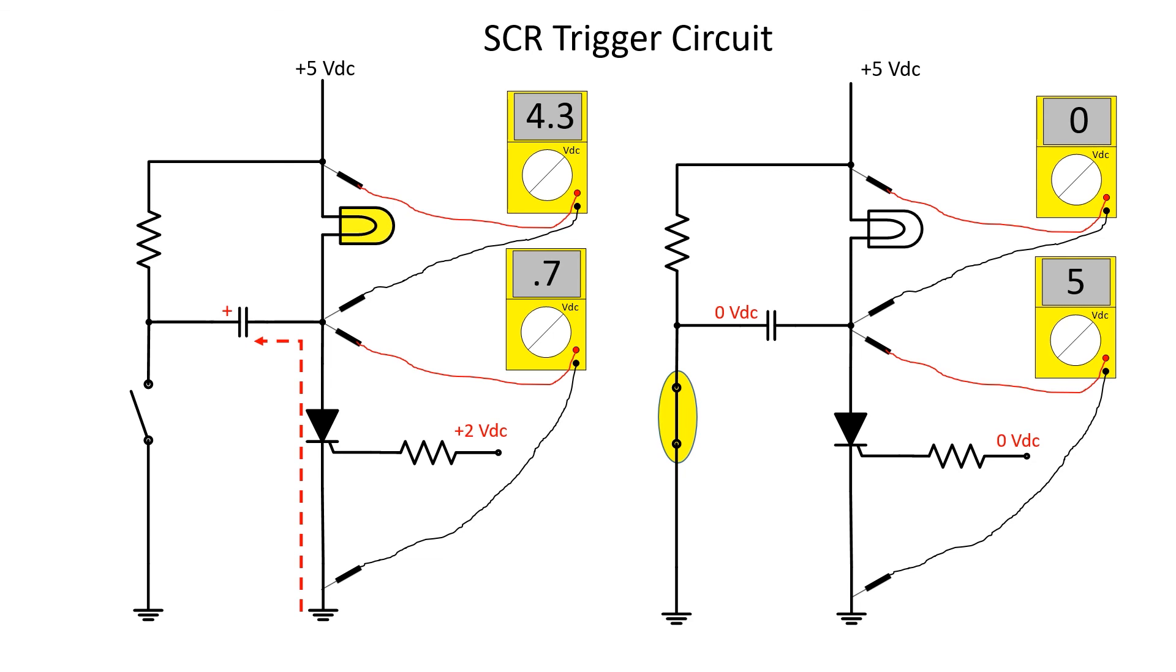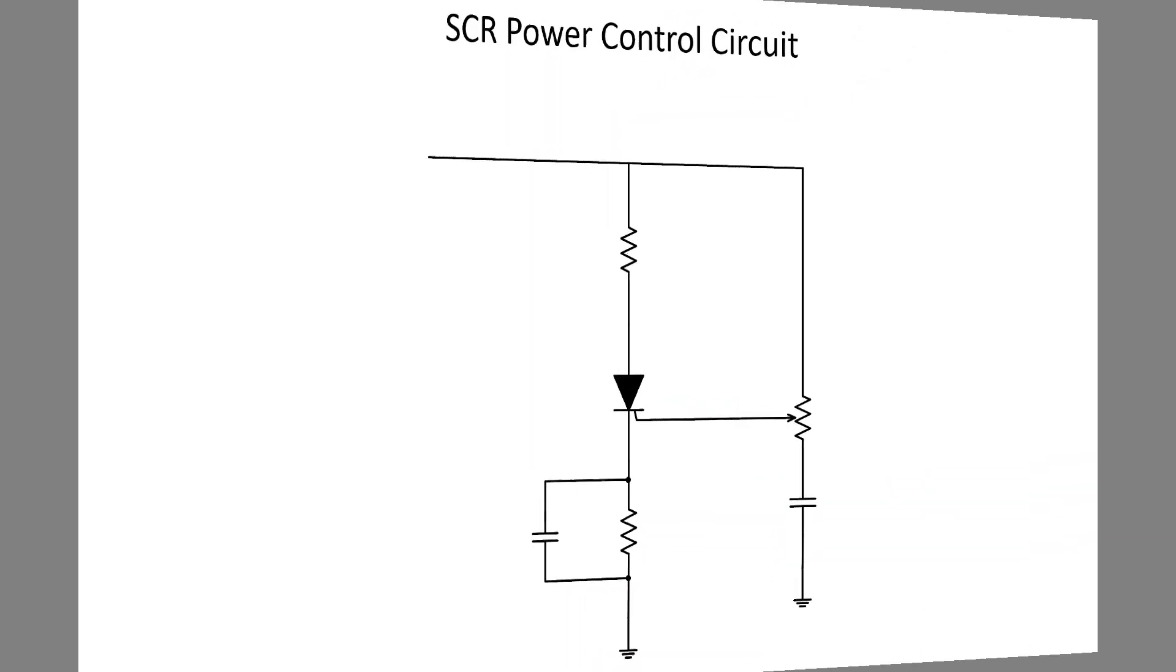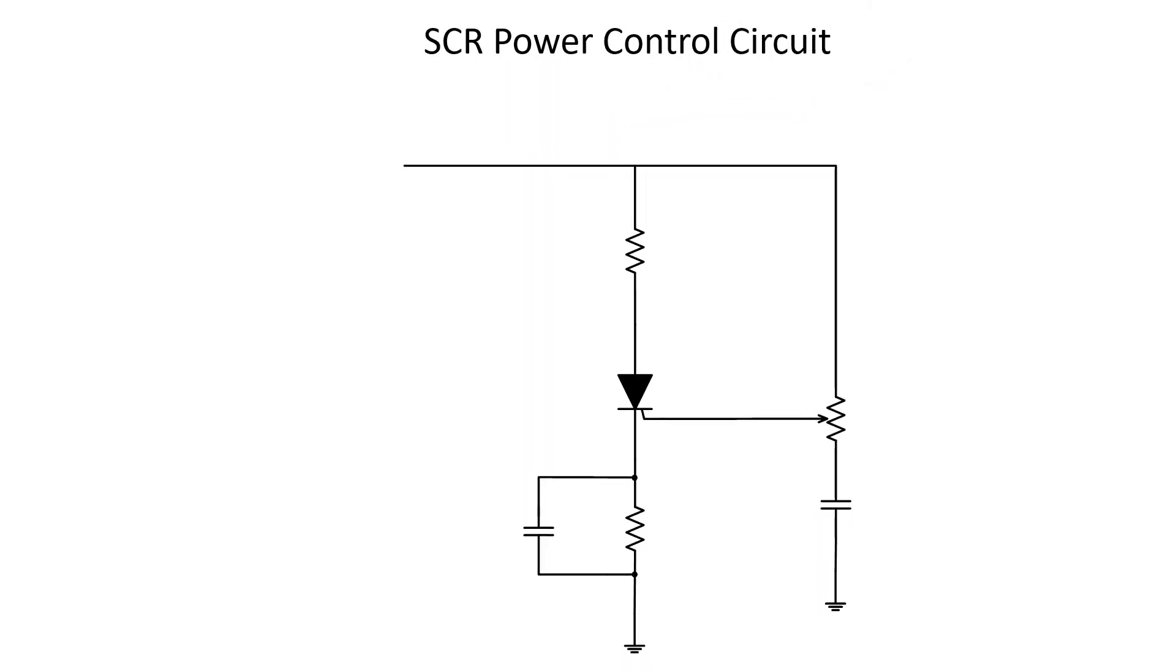Now let's use the SCR in a different circuit, the power control circuit. When used this way, the purpose is to rectify AC and control the amount of power to the load, which could be anything like a light or an alarm.